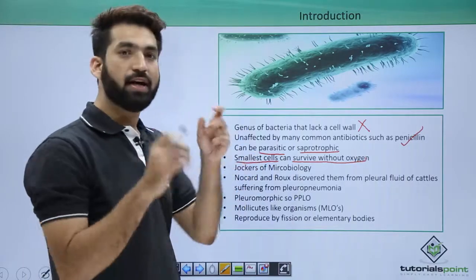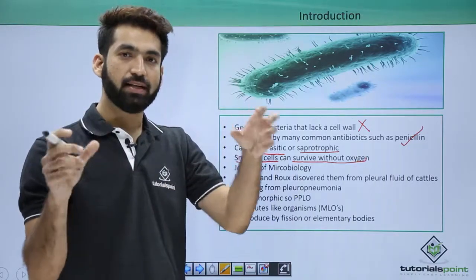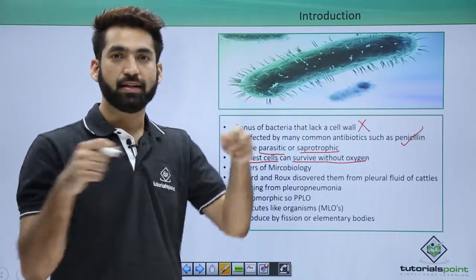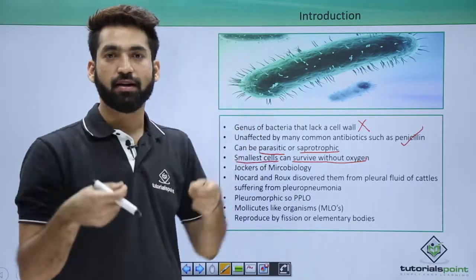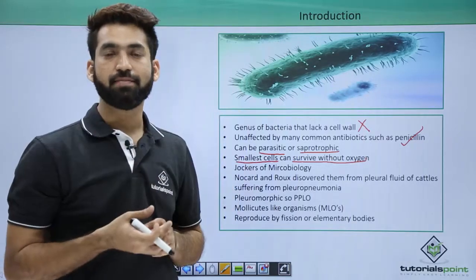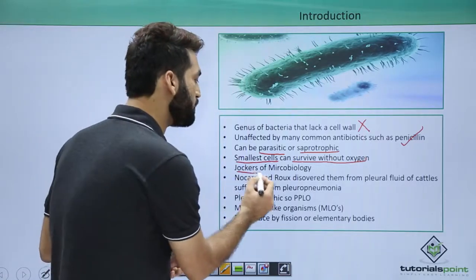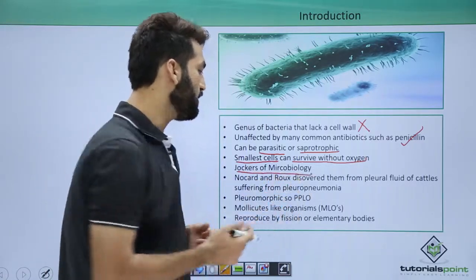Because they don't have a cell wall, they don't maintain rigidity and can contract, relax, and change different shapes. Because of this ability to change shape, they are also called the jokers of microbiology.